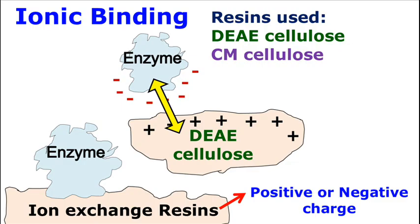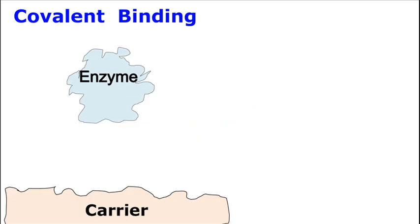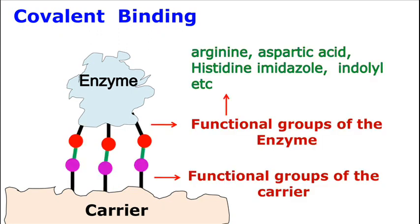During ionic binding, it is necessary to maintain pH, ionic strength, and temperature, because any change in these factors can disrupt the binding of the enzyme. Covalent binding is a permanent method for enzyme immobilization. This method involves covalent bond formation between the functional group of the carrier and the functional group of the side chain amino acids of the enzyme. The advantage of covalent binding is that immobilization is not affected by external factors such as pH and presence of ions. However, the catalytic site of the enzyme should not be affected during immobilization.